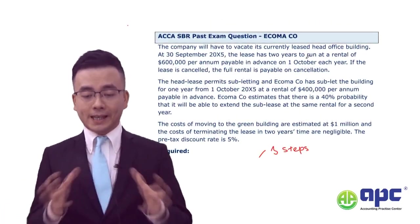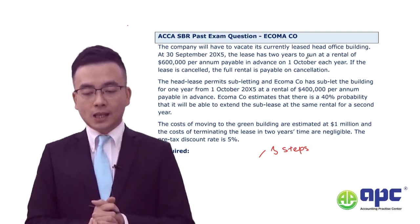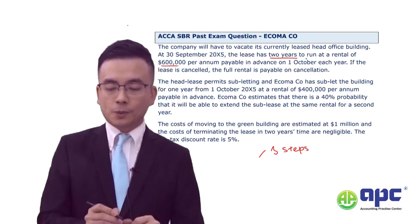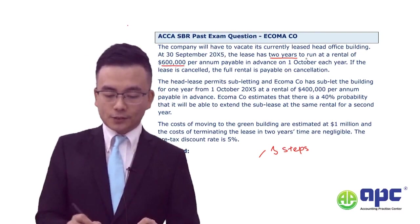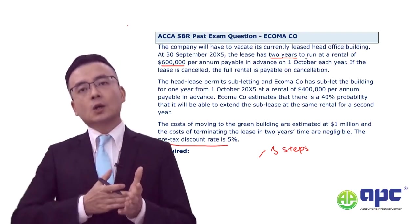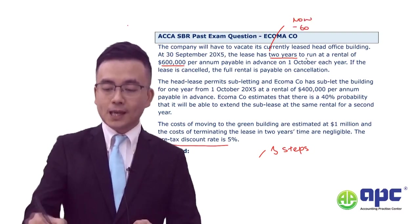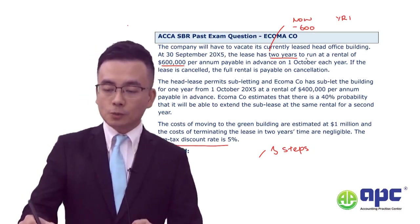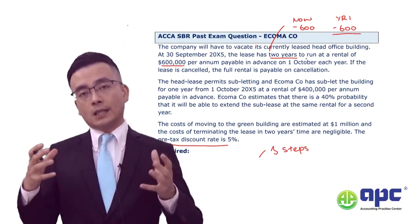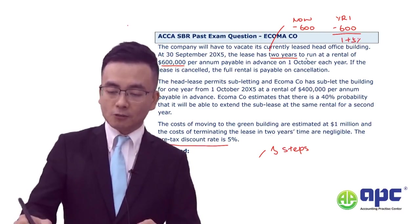We're told that the company will have to relocate its currently leased office building, and at that point the lease has two years to run, which means you need to pay the rental payment for two years at a rent of $600,000 per annum. The discount rate for that is the pre-tax discount rate of 5%. So this means that if I have to fulfil that contract, the cost to me would be $600,000 now, and in one year later another $600,000, discounted at the pre-tax discount rate to the power of one.